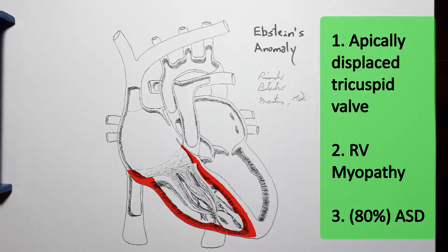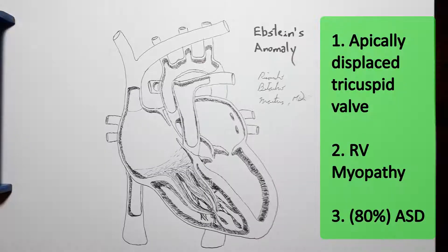The right ventricle is likely to have some degree of impairment with its function, additionally to what would be expected from the valve, and it's often — in more than 80% of cases — associated with atrial septal defects.